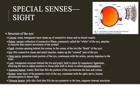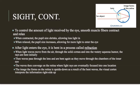Our final sense in this lecture is sight. As light changes and the amount of light available to the eye changes, the muscles around the pupil adjust accordingly. In a very bright environment — like the height of summer in the middle of the day — that's more light than the eye really needs, so the pupil will contract so that less light enters the eye.